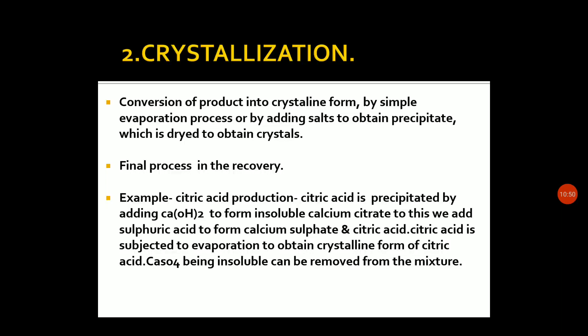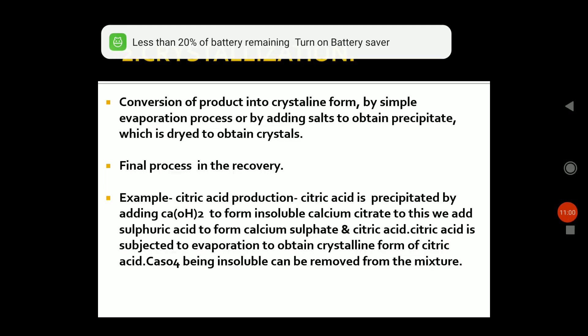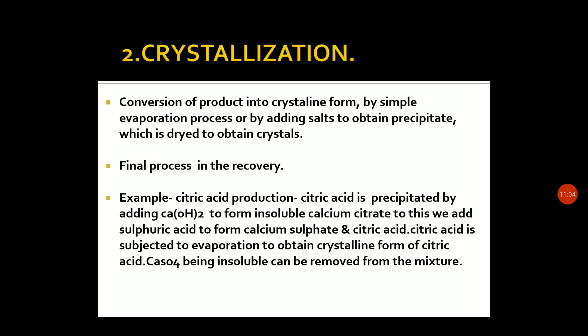What is crystallization? We precipitate the product and dry that precipitate. For example, in citric acid production, we use calcium hydroxide as the precipitating agent. It reacts to form calcium citrate, which is precipitated. We then add sulfuric acid; calcium sulphate is insoluble and removed. If we evaporate it, we convert it into the crystalline form.